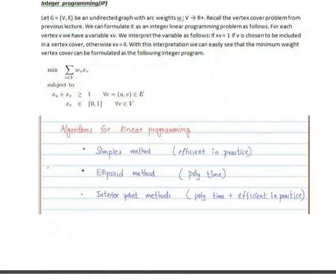We will see three kinds of algorithms for linear programming. We have the simplex method which is efficient in practice; the ellipsoid method which runs in polynomial time; and the interior point method which is both efficient in practice as well as polynomial time.